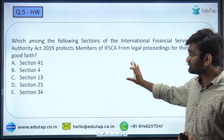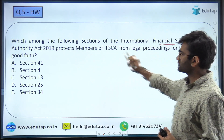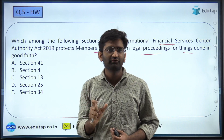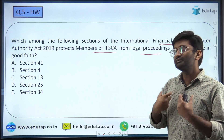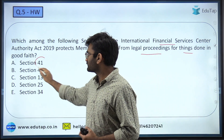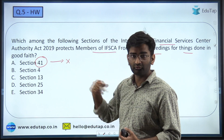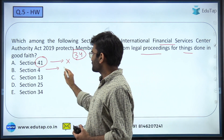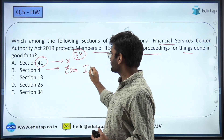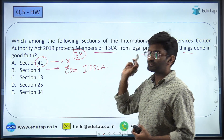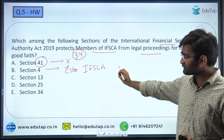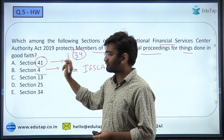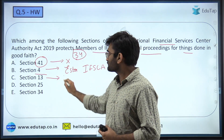Our aim is to help you understand the kind of questions you can expect in the exam. The homework question was: which among the following sections of the IFSCA Act protects members of IFSCA from legal proceedings for things done in good faith? Section 41 is not correct because there are only 34 sections in the IFSCA Act, so we can eliminate it. Section 4 talks about the establishment of the IFSCA authority.